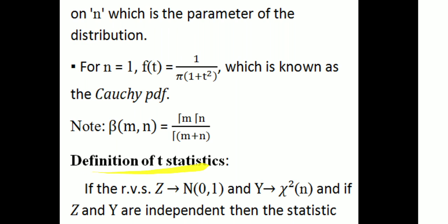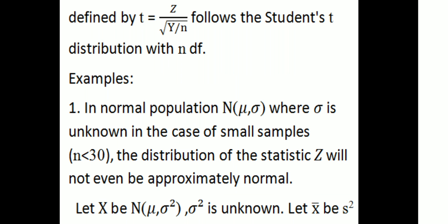Definition of t-statistic: If the random variable z follows N(0,1), that is a normal distribution with mean 0 and variance 1, and y follows a chi-square distribution with n degrees of freedom, and if z and y are independent, then the statistic defined by t = z / √(y/n) follows the student t-distribution with n degrees of freedom.